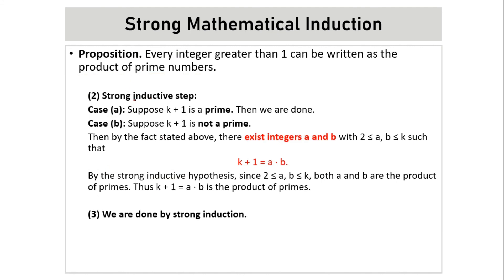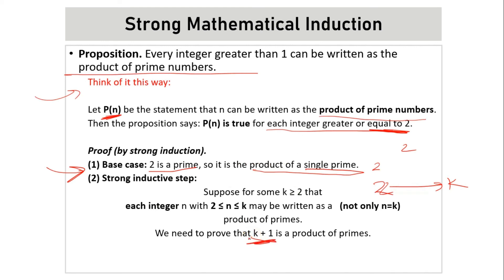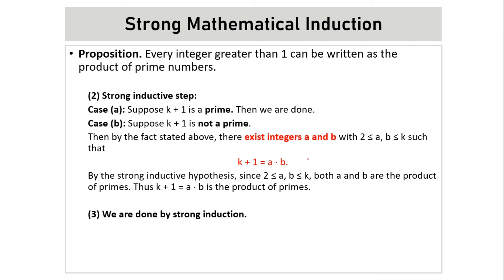In the strong induction step, we consider two cases. Case one: suppose K plus one is a prime — then we are done, since K plus one itself is a product of a single prime. Case two: if K plus one is not prime, then by the definition of composite numbers, there exist integers A and B lying between two and K such that K plus one equals A times B. By the strong induction hypothesis, since two is less than or equal to A and B is less than or equal to K, both A and B can be written as products of primes. Thus, K plus one equals A times B, which is also a product of primes.